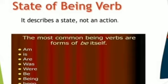Now we shall see one example. The king was kind. Here, the word 'was' is the verb, and 'kind' is an adjective. Another example: they will be happy. So here, the verb is 'will be' and 'happy' is an adjective.